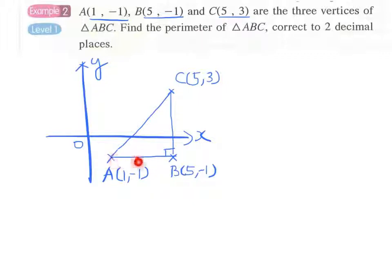AB is quite easy because we simply subtract the x-coordinates. For BC, it is quite easy—we simply subtract the y-coordinates. But for AC, we have to apply the distance formula.